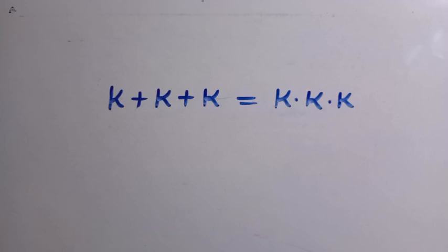Good day viewers, you are welcome. How to solve this nice olympiad equation: we have K multiplied by K plus K plus K equals K multiplied by K multiplied by K. So we need all the values of K that satisfy this, and let's see how we can solve it.